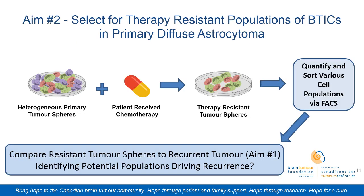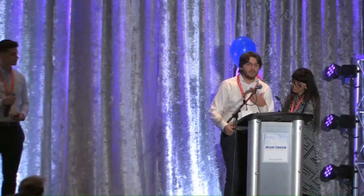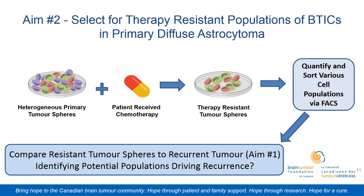This takes us to aim two, where our goal is to mimic the recurrent tumor by selecting for those cells that are therapy-resistant from the primary heterogeneous tumor. The primary tumorsphere culture would be given the same chemotherapy treatment that the patient received in clinic. This would provide us with a population of those resistant cells driving the tumor recurrence. Once we have these populations, we can characterize, quantify, and identify these cells and compare them back with the patient's recurrent tumor sample.